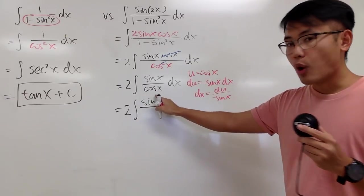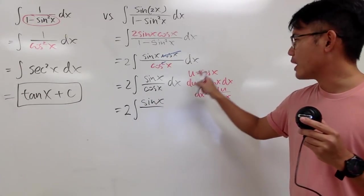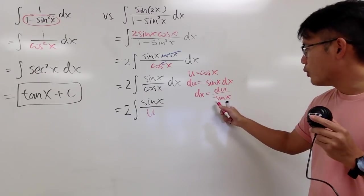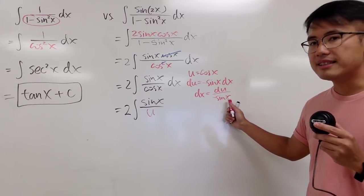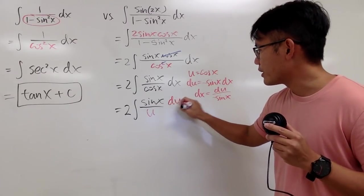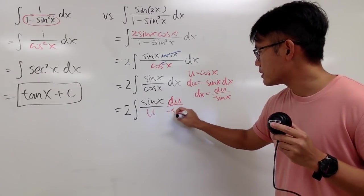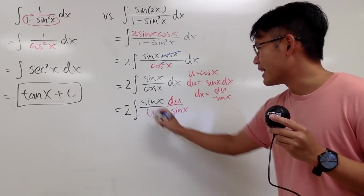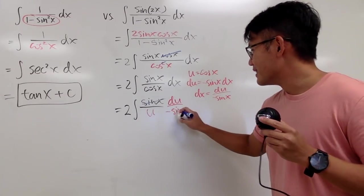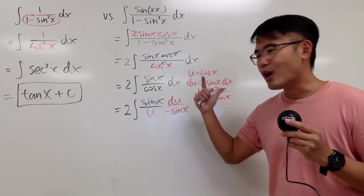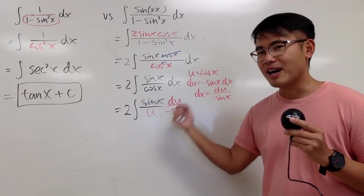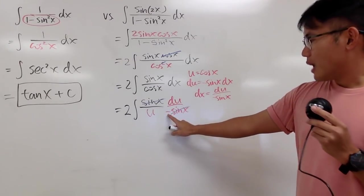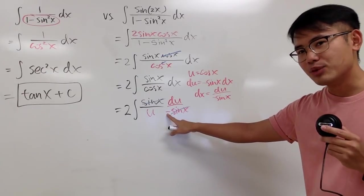Then cosine x is our u, and dx is du over negative sine x, so let's put that down. The most exciting part is that sine x cancels, so we are completely in the u-world. However, notice that we do have this negative.